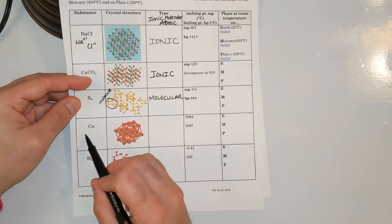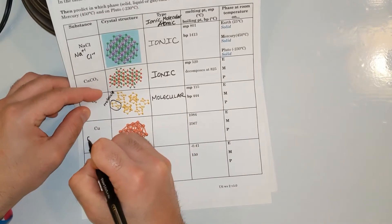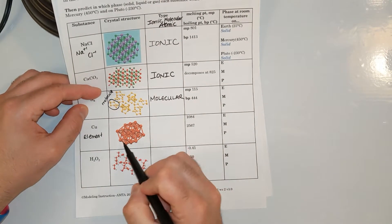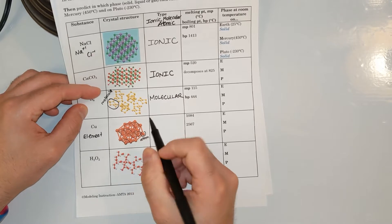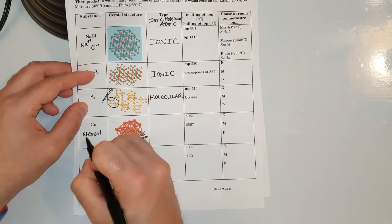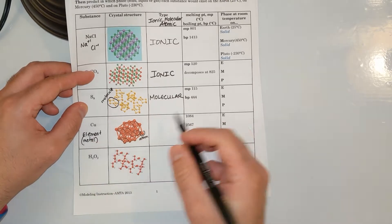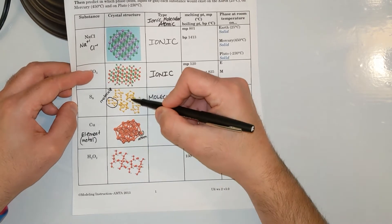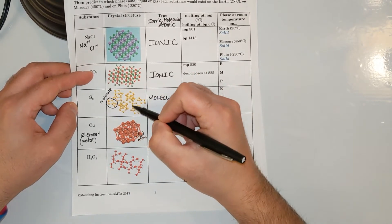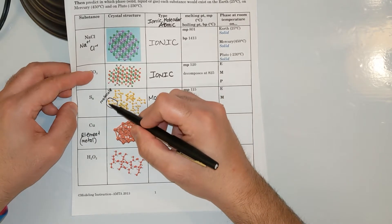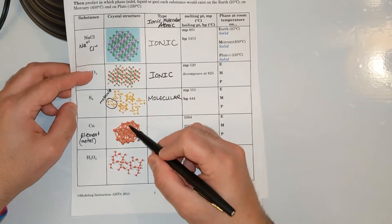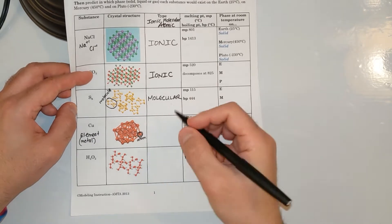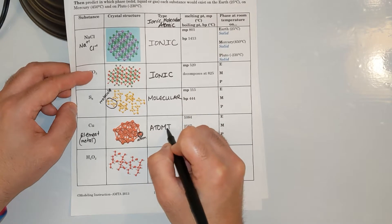Next one, we got copper. Copper is just an element, and all of the atoms are connected. The smallest particle is an atom and they're completely connected — this is a metal. Look at the difference: S8 has more than one kind connected to each other but they're not connected between molecules. Copper is completely connected with only one type of smallest particle, the atom. That makes this an atomic solid.